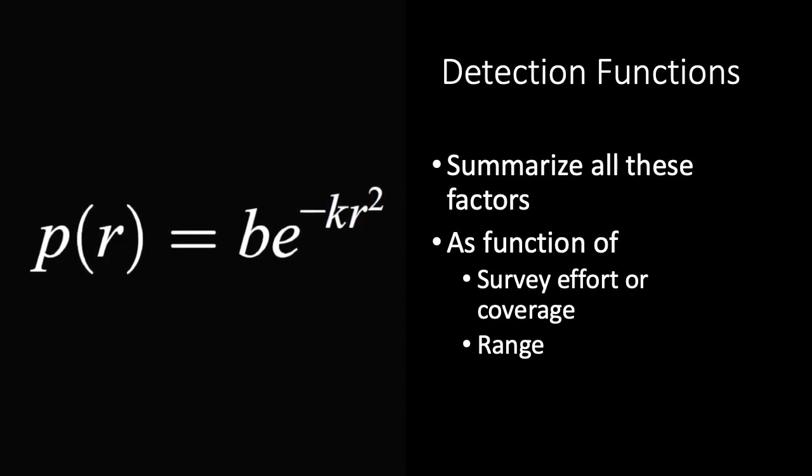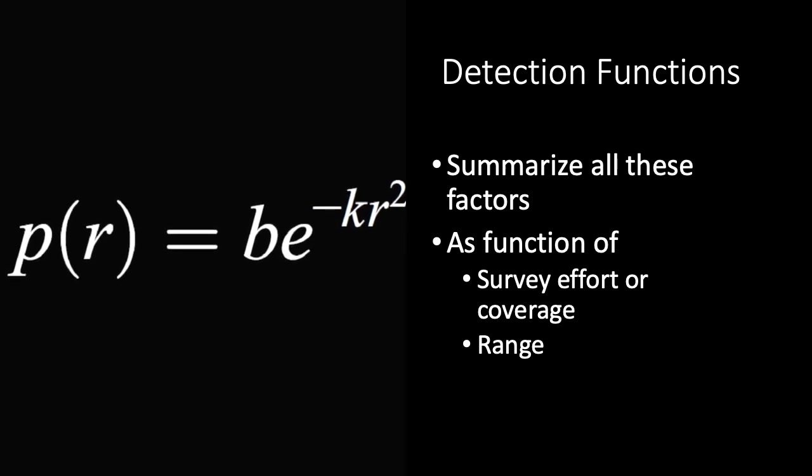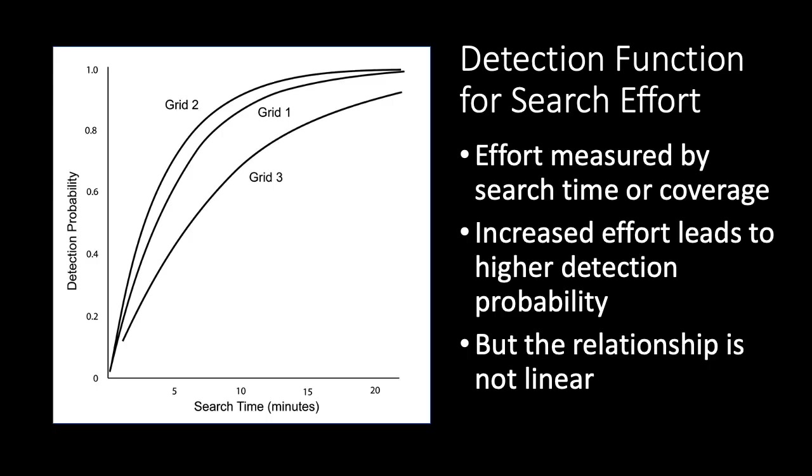As it turns out, we can summarize many of these factors simultaneously in a mathematical formula. These are called detection functions, and one detection function describes the relationship between search effort and probability of detection.